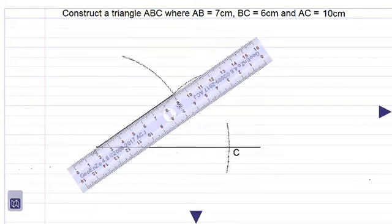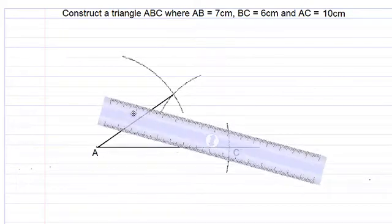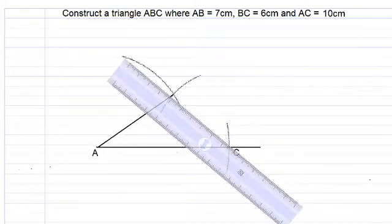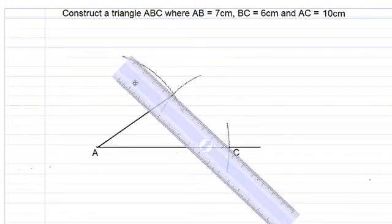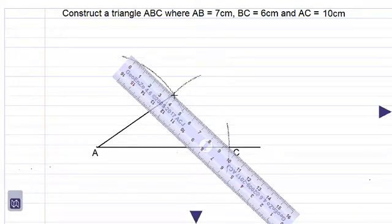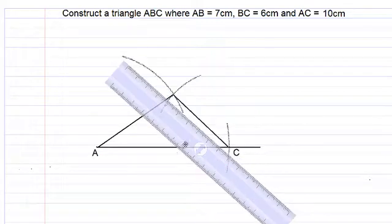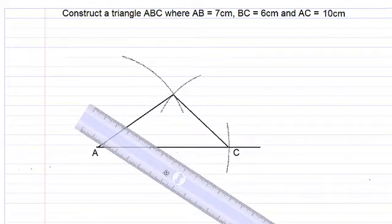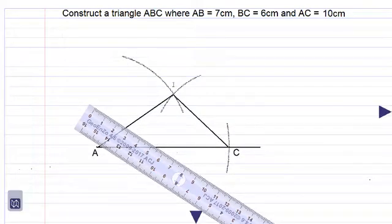And we connect point C to this point now using our deeper pencil. And that's what we have. So this point would be point B.